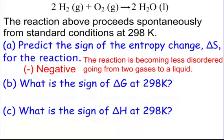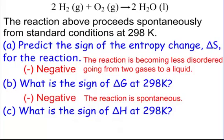And then B says, what is the sign of delta G, Gibbs free energy, whether this is spontaneous or not, at 298 Kelvin? And, of course, this reaction is spontaneous. It happens. And so our value for delta G is negative. It's negative.